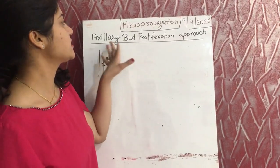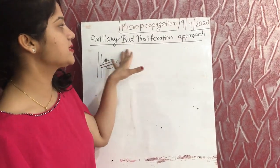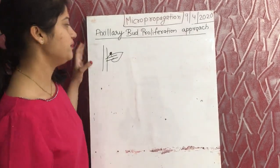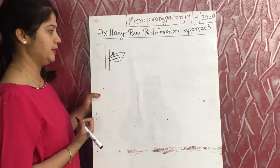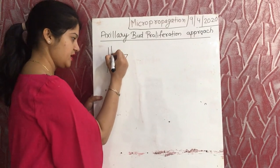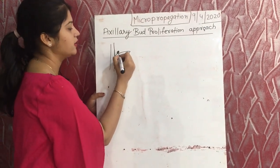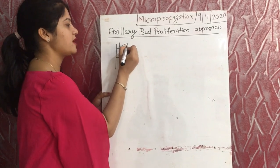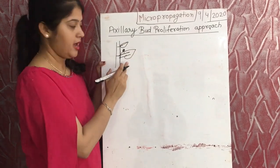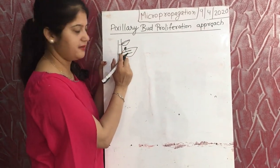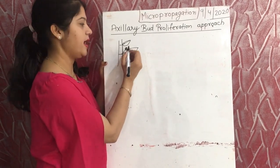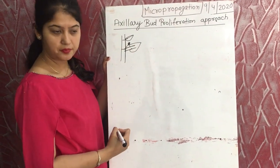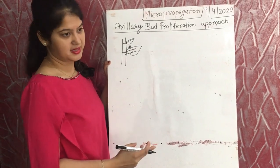The next topic is the axillary bud proliferation approach. First, what is an axillary bud? This is the main stem, and on the nodal portion of the main stem, leaves are present. In the axil of the leaves — meaning between the main stem and the leaf — there is a bud present. What is the fate of the axillary bud?